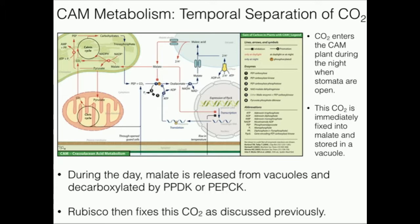Now, if the stomata were open in the middle of the day in the desert, water would evaporate from that — the water would actually leave the CAM plant because it's really hot, it's really dry, and it's going to evaporate right out of the plant. The plant would become dehydrated. So what the plant does is during the day, it closes the stomata.